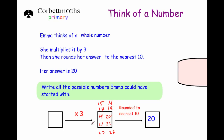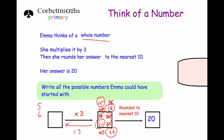Now we divide by three to find what Emma may have started with, looking only for whole number results. Fifteen divided by three is five ✓. Sixteen and seventeen divided by three don't give whole numbers. Eighteen divided by three is six ✓. Nineteen and twenty don't divide evenly by three. Twenty-one divided by three is seven ✓. Twenty-two and twenty-three don't work. Twenty-four divided by three is eight ✓. So the possible numbers Emma could have started with are five, six, seven, or eight.